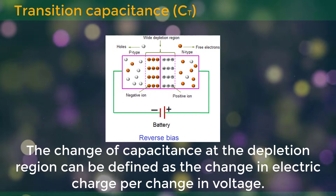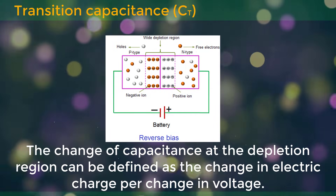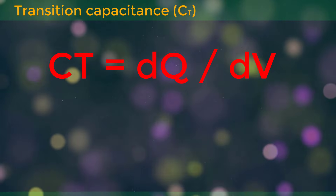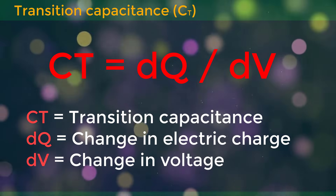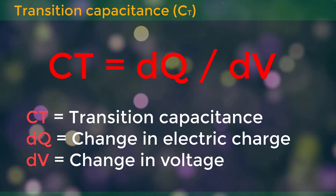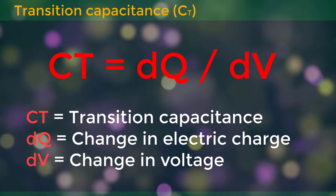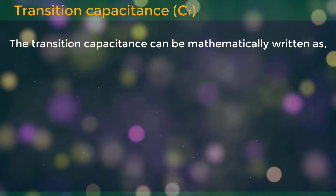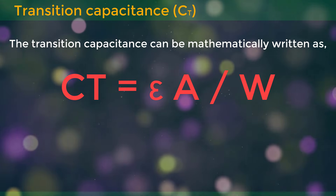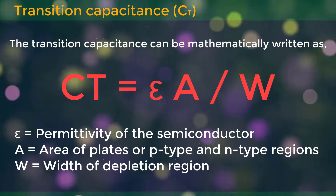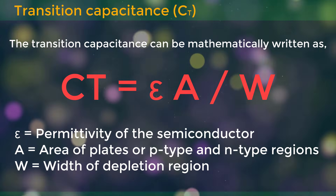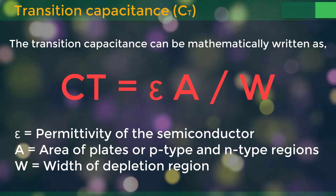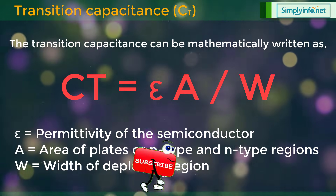The change of capacitance at the depletion region can be defined as the change in electrical charge per change in voltage. So, CT equals dQ by dV, where CT stands for transition capacitance, dQ is the change in electric charge, and dV is the change in voltage. The transition capacitance can be mathematically written as CT = εA/W, where ε is the permittivity of the material, A is the area of the plates or P-type and N-type regions, and W is the width of the depletion region.